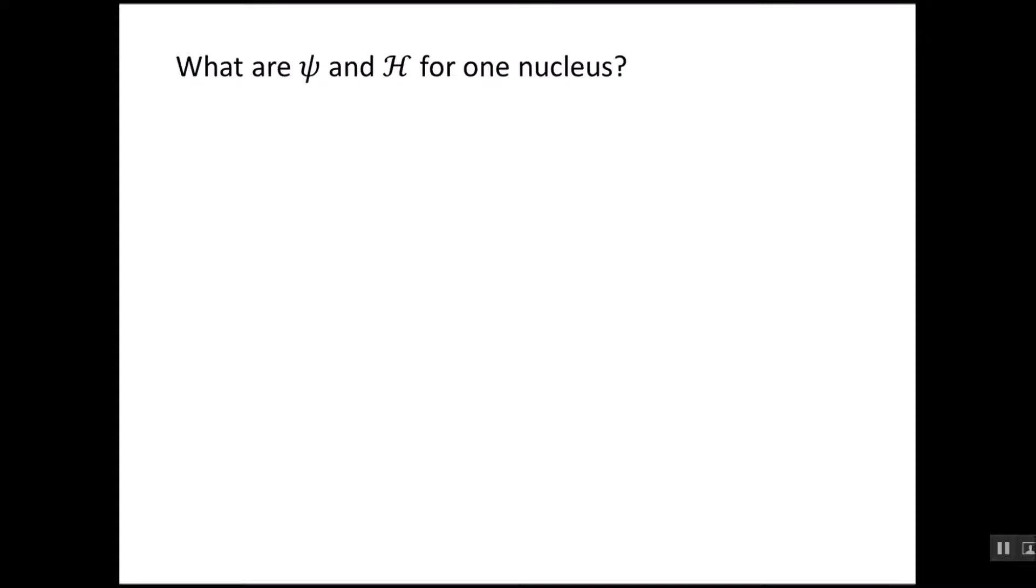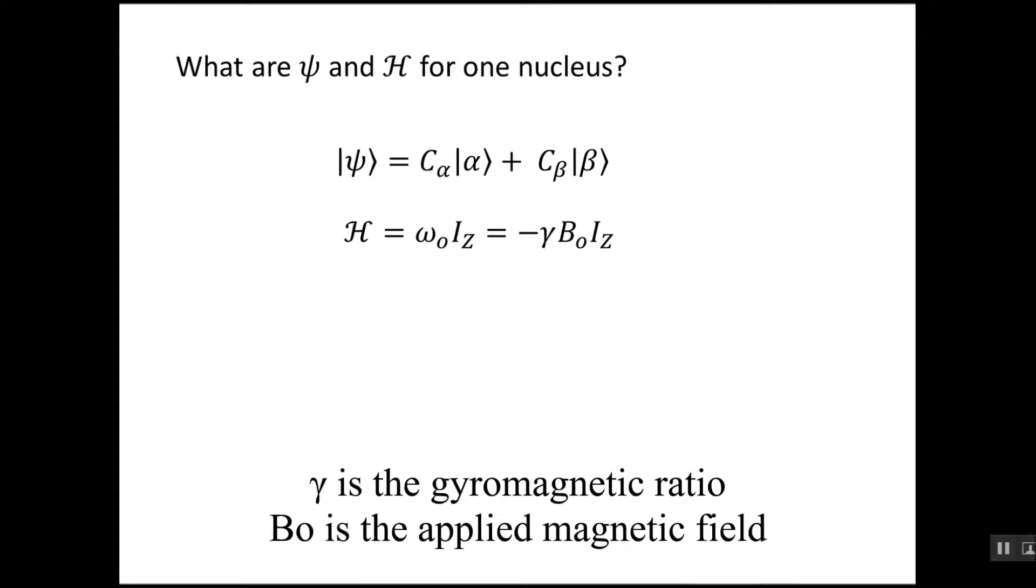So we talked a lot about wave functions and Hamiltonians, and how we use them to get energy values. But what are these wave functions and Hamiltonians for one nucleus? The wave function is usually written as a sum of all the different states that a spin can be in. In the case of one spin, it can either be aligned with the field or against the field. So these two states are called alpha and beta, and we have some weighting of alpha and some weighting of beta. We call these the C terms. And the Hamiltonian is just given in terms of this operator IZ. It's just the Larmor frequency times IZ, which is the same thing as gamma B0 IZ.